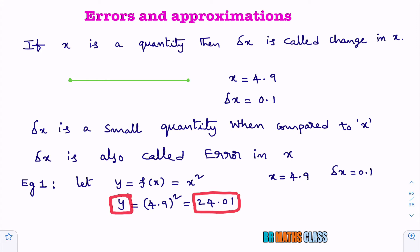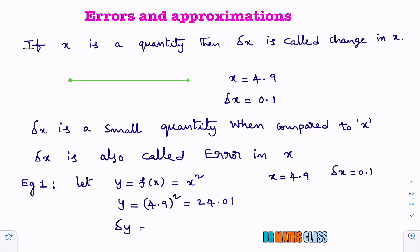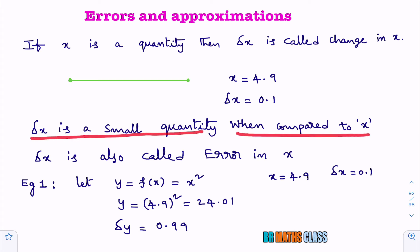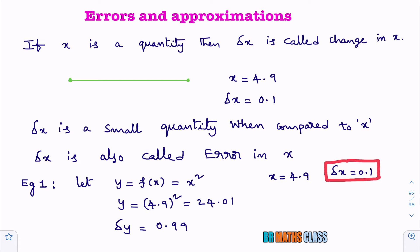Delta y is known as corresponding change in y with respect to x. Actually, what we need to get for y is 25, but we got 24.01. That means error in y occurred — change in y occurred. Delta y here is 0.99, and if we add these two we get 25. Delta y is a very small quantity when compared to y. If delta x is change in x, then delta y is known as corresponding change in y with respect to x.